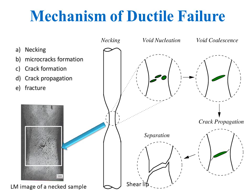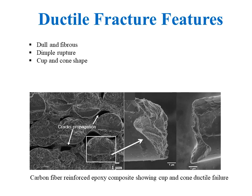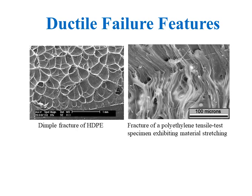Dimples form when microvoids tear apart during the rupture process. Under tensile fracture, dimples are either round or oval depending on the ductility of the material. Ductile fracture surfaces mainly produce dull fibrous morphology, dimples on the surface, and a cup and cone shape. One example of cup and cone ductile fracture can be seen in carbon fiber reinforced epoxy composite, where high magnification SEM images of the fractured surface of carbon fiber show the formation of cup and cone, indicating that the composite fractured in a ductile manner. Dimple rupture is another feature visible in SEM images of high density polyethylene fractured samples.